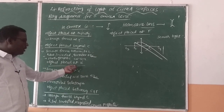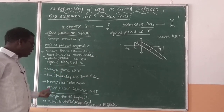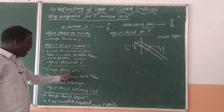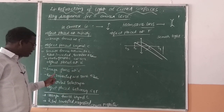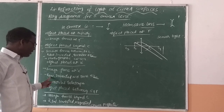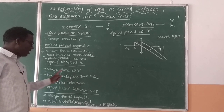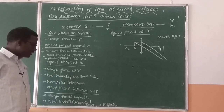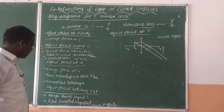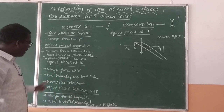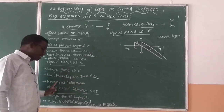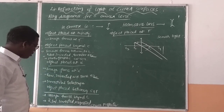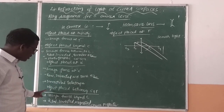When the object is placed at 2F, the image is also formed at 2F. The nature of the image is real, inverted, and the same size as the object. This type of image is formed in a reflecting telescope.